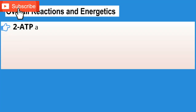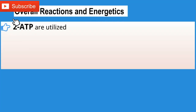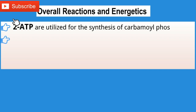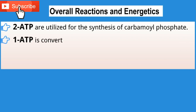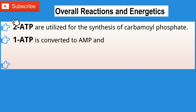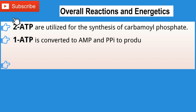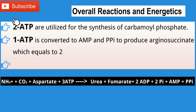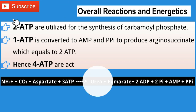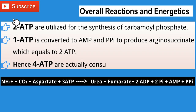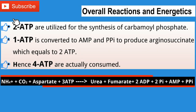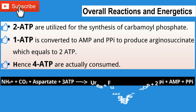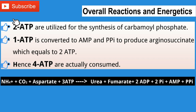Overall reaction and energetics of the urea cycle: 2 ATP are utilized for the synthesis of carbamoyl phosphate. 1 ATP is converted to AMP and pyrophosphate to produce arginosuccinate, which equals 2 ATP. Hence, 4 ATP are actually consumed. This is how we represent the urea cycle in a single overall reaction.